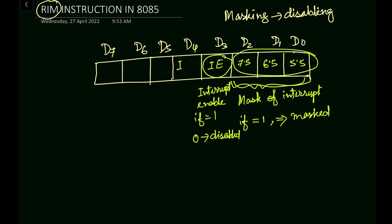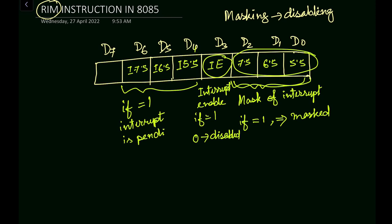Next we have D4, D5, and D6, which will hold interrupt 5.5, interrupt 6.5, and interrupt 7.5 respectively. The meaning of these three bits: whenever we have a value of 1 in any of these, that means the interrupt is pending — meaning the interrupt is not yet acknowledged.